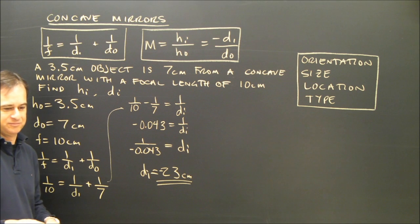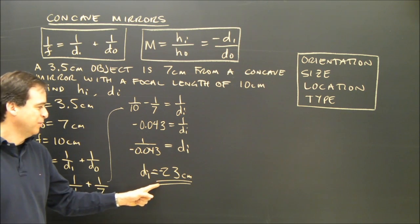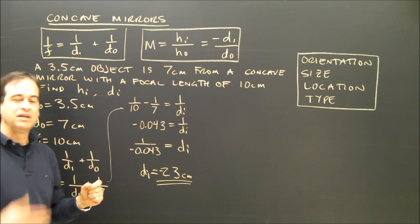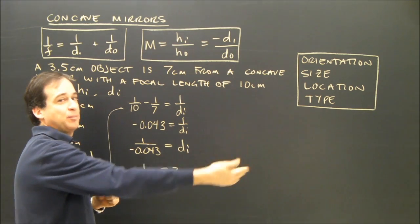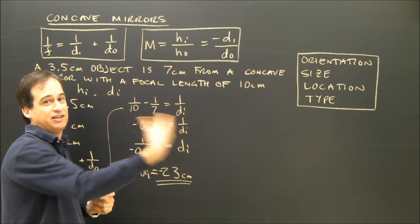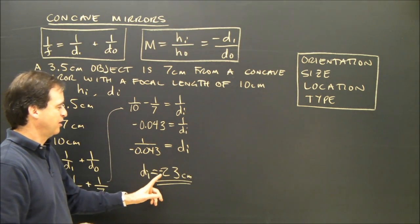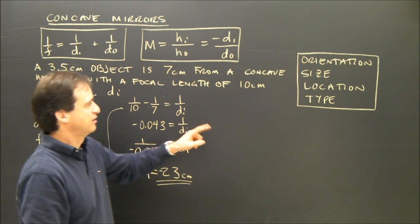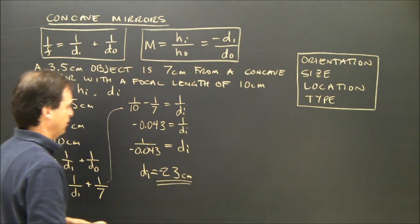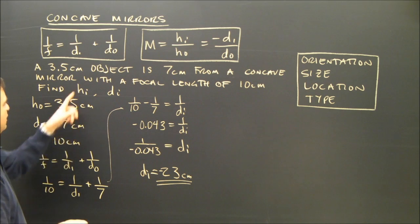So the distance to the image is negative 23 centimeters. What does that mean? When the distance to the image is negative, it means that the image is on the opposite side of the mirror and it's virtual. So we have a virtual image on the opposite side of the mirror. Now let's calculate hi.